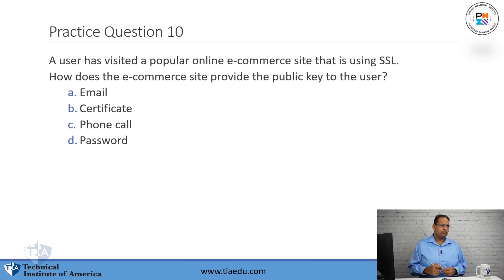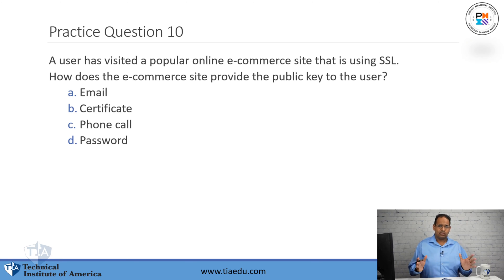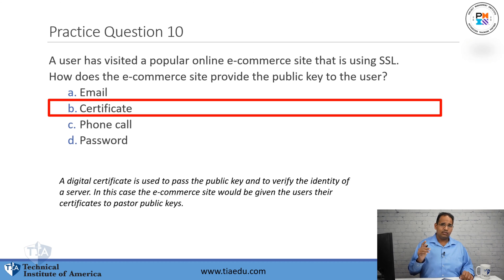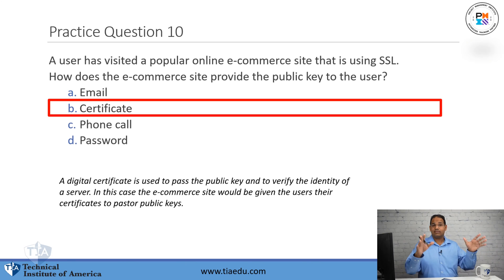Finally, question ten: A user has visited a popular online e-commerce site that is using SSL. How does the e-commerce site provide the public key to the user? A. Email. B. Certificate. C. Phone call. D. Password. The answer is a certificate. When you go to Amazon and set up an SSL connection, Amazon presents their certificate to you — and on that certificate is Amazon's public key.